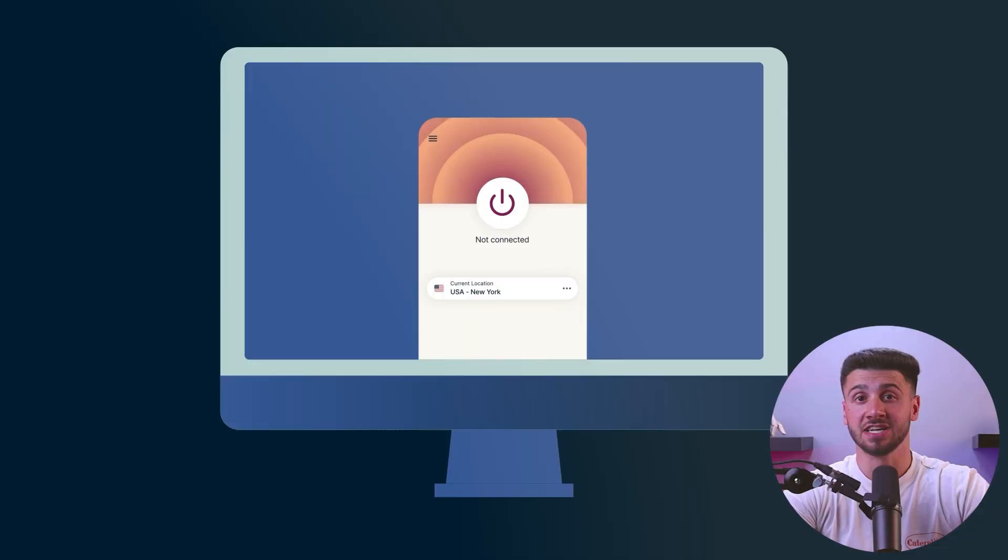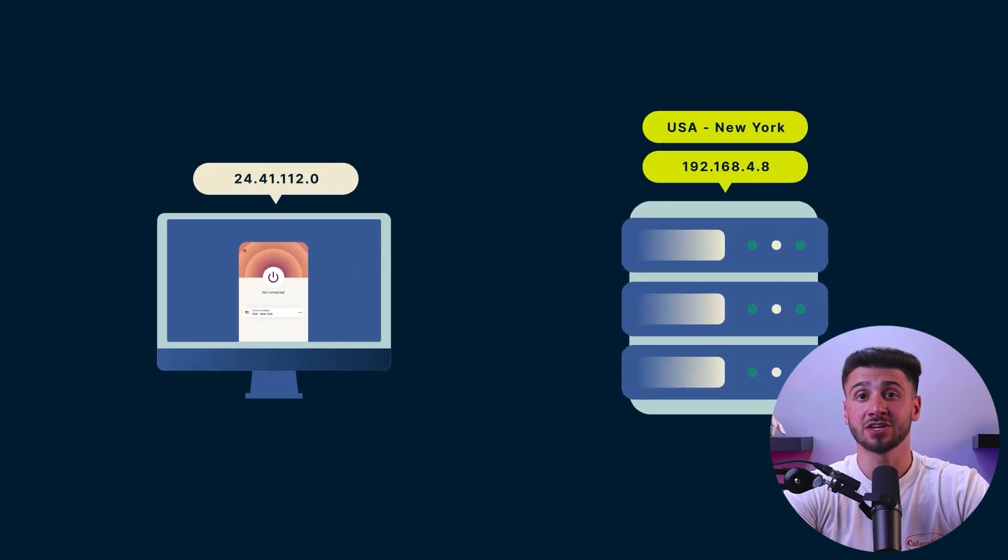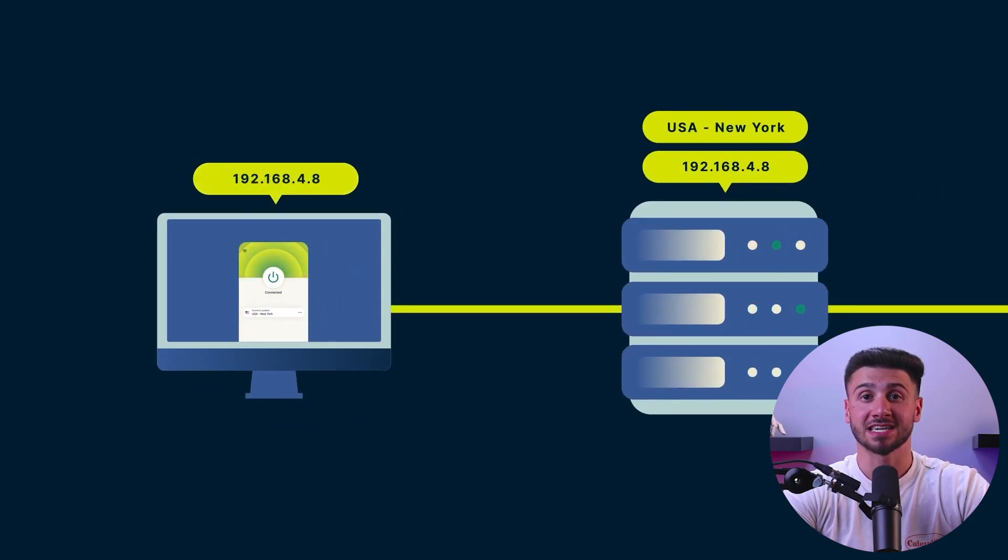When you use a VPN app, your device connects to a VPN server through an encrypted tunnel. The VPN server acts as an intermediary between your device and the internet, encrypting your internet traffic and masking your IP address. This allows you to browse the internet privately and securely without anyone being able to track your online activity.